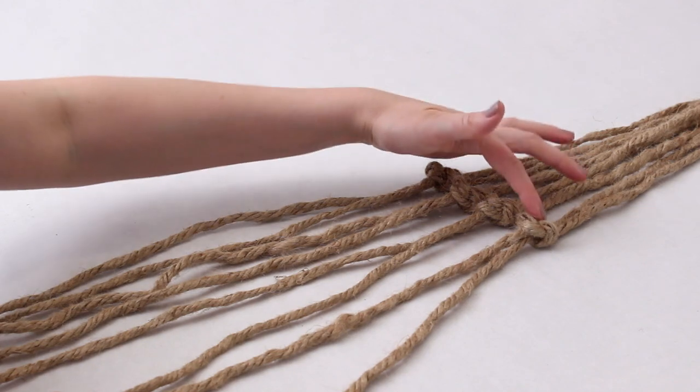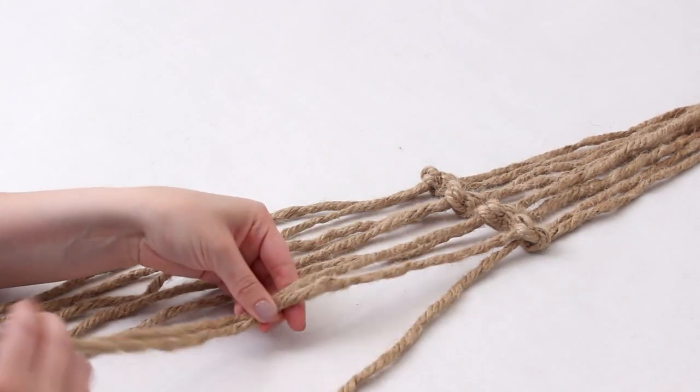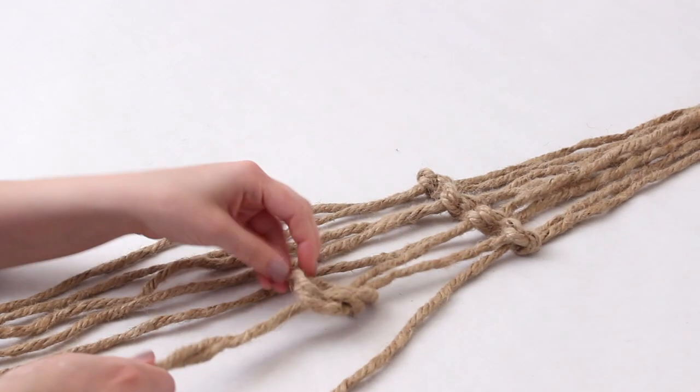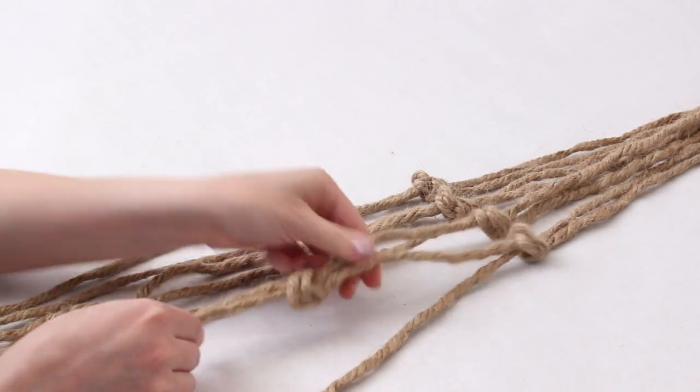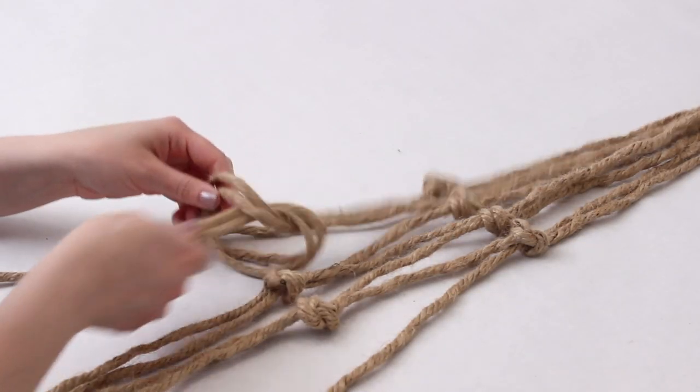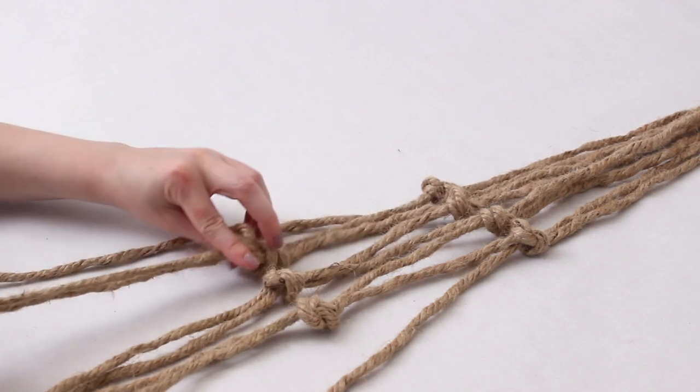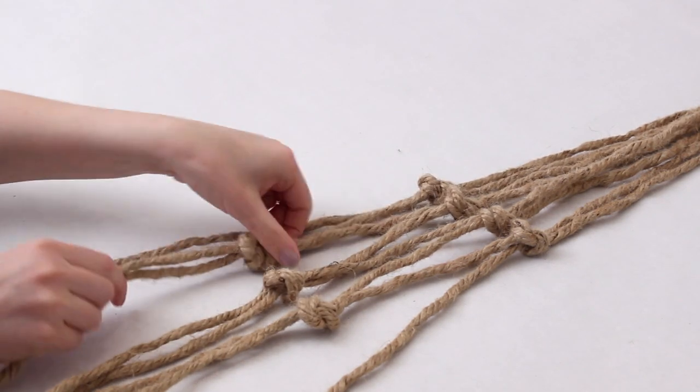Once you've finished with that choose two of the knots that you just made and then pull up the two strings that lie in between them. Now you're going to use those to make another knot a few inches down. And again continue doing this. Choose two of your top knots and then take the two strings that are lying in between them and make another knot. So you have four more knots a little ways down all the same height.